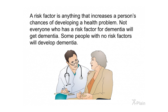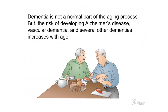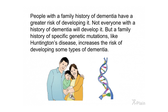A risk factor is anything that increases a person's chances of developing a health problem. Not everyone with a risk factor for dementia will get it, and some people with no risk factors will develop dementia. Risk factors that cannot be changed include age, family history, and Down syndrome. Dementia is not a normal part of aging, but the risk of developing Alzheimer's disease, vascular dementia, and several other dementias increases with age. A family history of specific genetic mutations like Huntington's disease also increases risk.